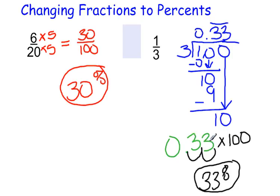One third equals 33 hundredths as a decimal and 33 percent for the percent.